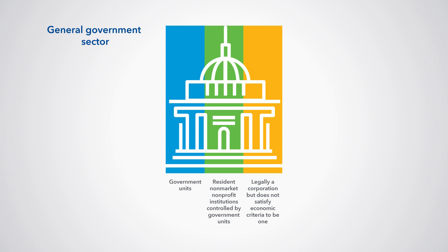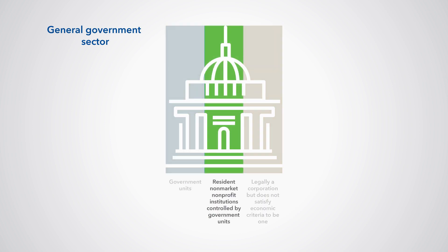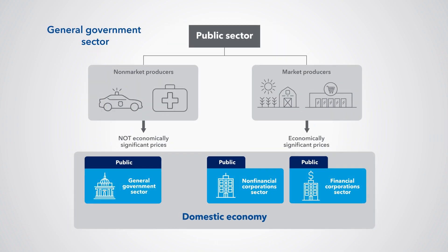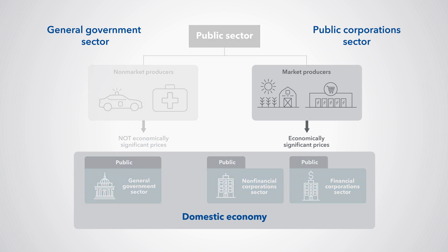We include in the general government sector all government units and all resident non-market, non-profit institutions that are controlled by government units. The general government sector also includes public enterprises which are legally corporations but which do not satisfy the criteria to be considered corporations — in other words, these public enterprises are non-market producers. Second, the public corporations sector. We include all corporations controlled by government units or other public corporations and which satisfy the statistical criteria to be considered as corporations. In other words, these public corporations are market producers. We distinguish between public non-financial and public financial corporations.